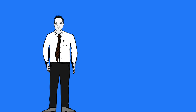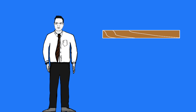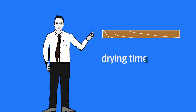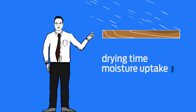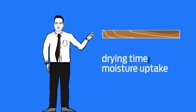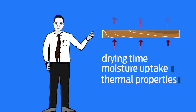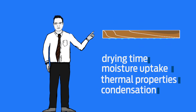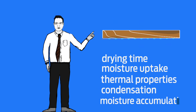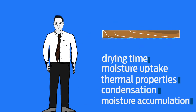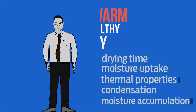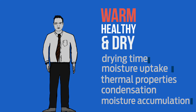We are interested in parameters like component drying time, moisture uptake in driving rain, moisture influence on thermal properties, potential condensation problems, and moisture accumulation — all of which can affect the way our buildings keep us warm, healthy, and dry.